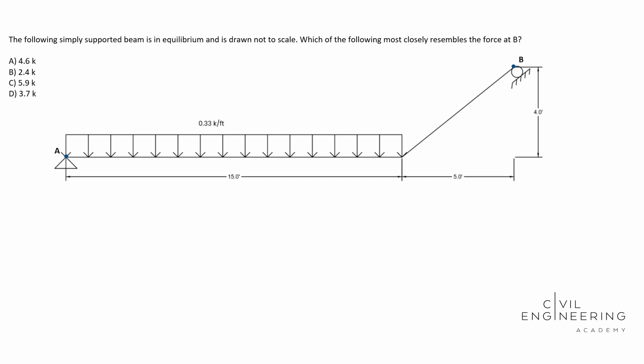Let's get started here with our unknown reactions. That's step one. This guy is a pin so it's going to have an AY associated with it and it's also going to have an AX. We have a roller over here so that's going to act perpendicular to the surface it's acting on. We're going to call this guy BY and it just helps to picture this in our problem.